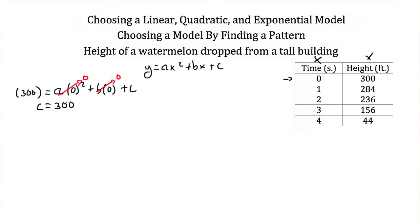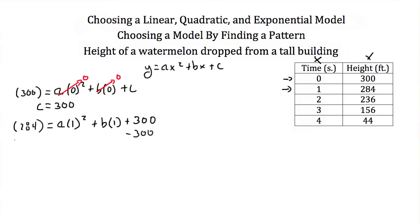Next I'll plug in the point (1, 284). That gives us 284 = a(1)² + b(1) + 300. Subtracting 300 from both sides, we get a + b = 284 - 300, which is -16.